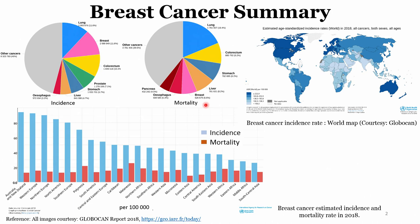Looking at incidence and mortality rates throughout the world, on the x-axis we have different countries and on the y-axis we have plotted the incidence rates in blue and mortality in red. For developed countries such as Australia, New Zealand, Europe, and America, there are large numbers of incidence rates compared to mortality — mortality is fairly less. But for less developed or developing countries such as India and South Africa, the incidence rates are lower but mortality rates are comparatively higher.